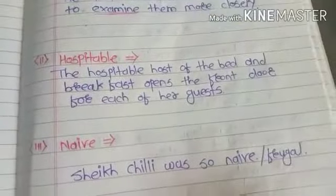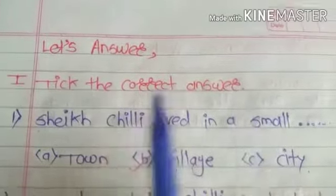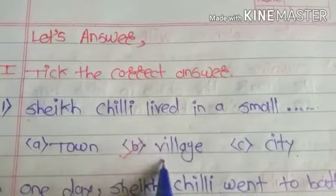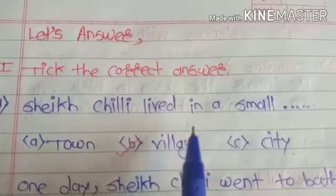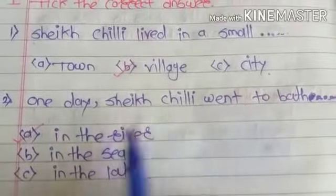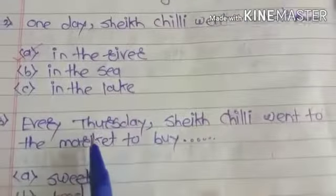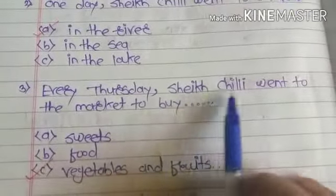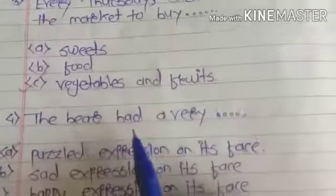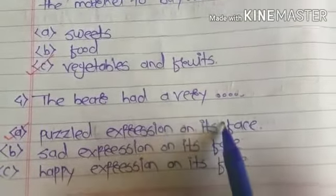Now let's take the correct answers. Sheikh Chilli lived in a small village near the river of Panjam. One day Sheikh Chilli went to bathe in the river. Every Thursday Sheikh Chilli went to the market to buy vegetables and fruits. The bear had a puzzled expression on its face.